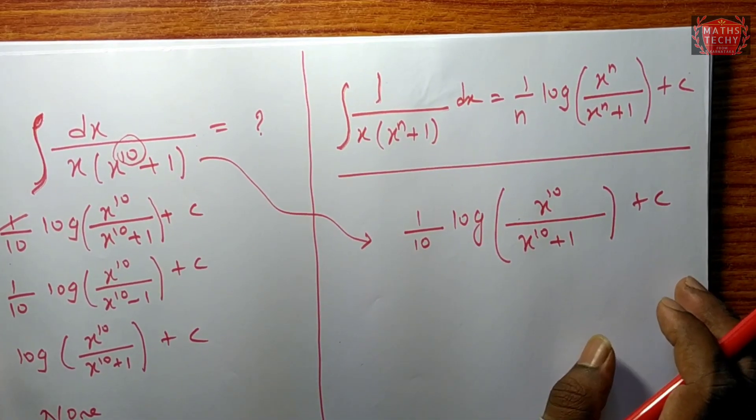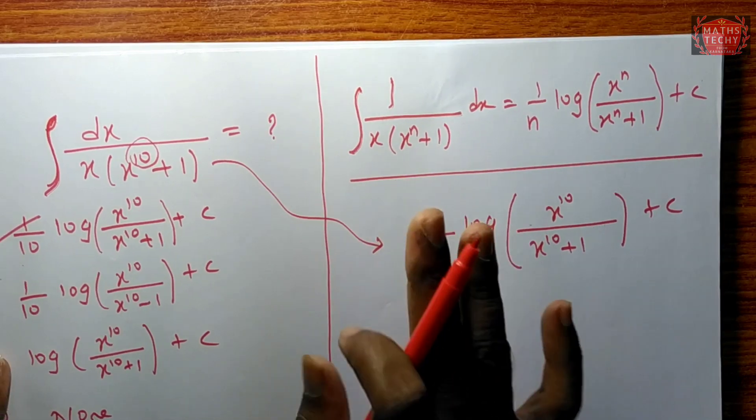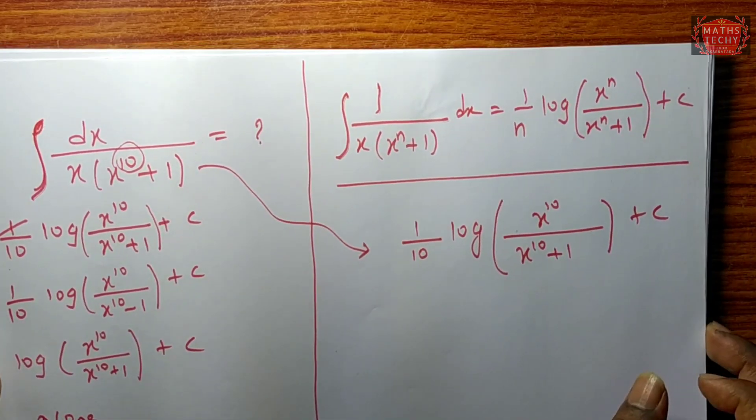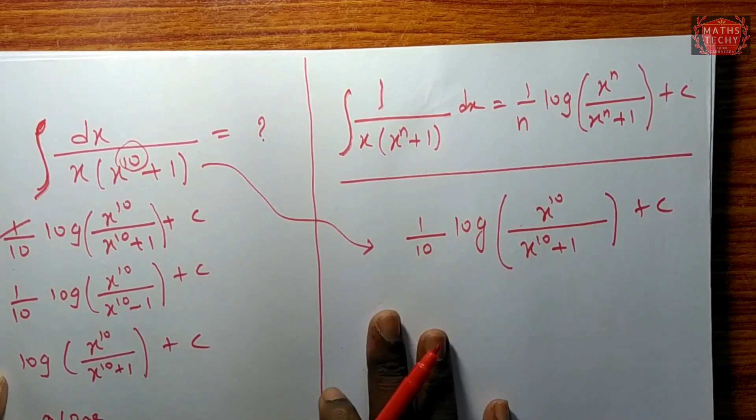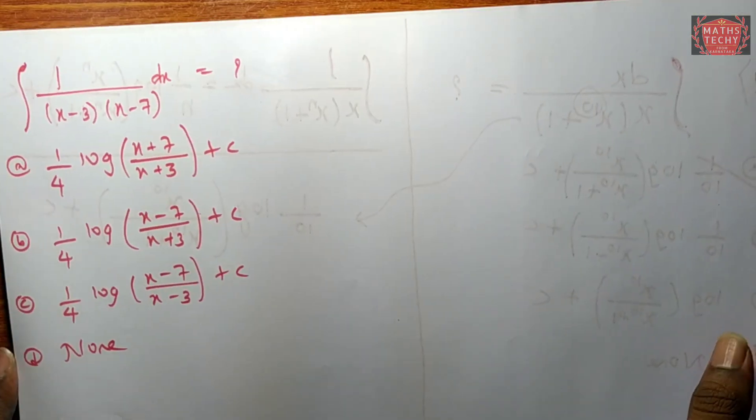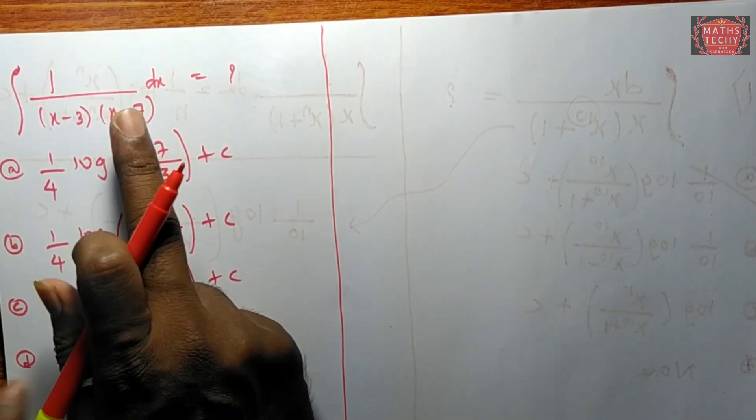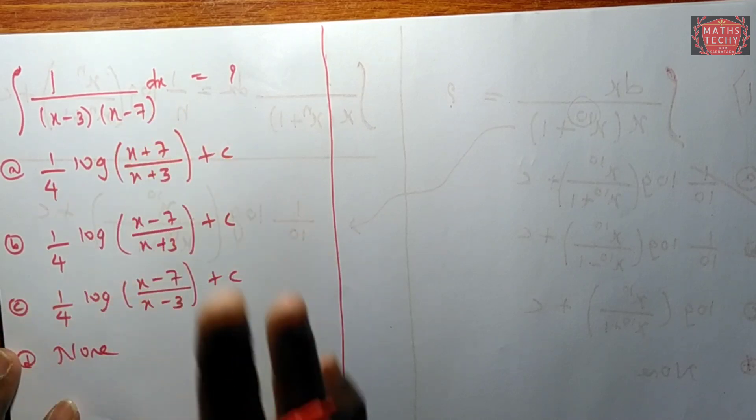Similarly, standard result. This is a shortcut trick. You can use this to save time. Okay? Now I will solve the next problem. Now the problem is partial fraction.